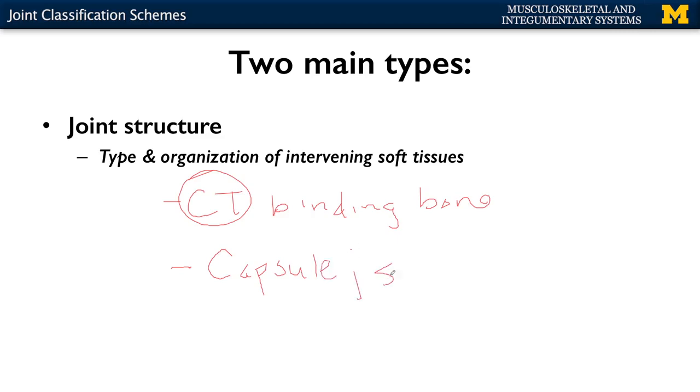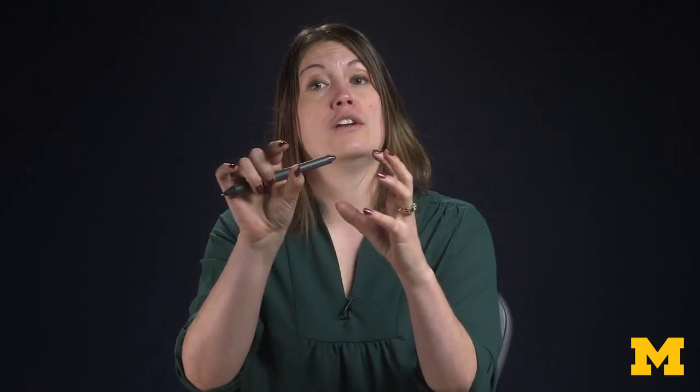You're going to have space in between the bones. Those synovial joints — those freely movable joints — are examples of this. You're going to have an articular capsule, then a synovial cavity that actually separates the two bones, which is really important in terms of allowing the bones to move. That's how you distinguish joints in terms of joint structure.